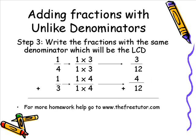Step 3 is to rewrite the fractions with the same denominator — the least common denominator from the previous step. As you can see, we have changed 1/4 to become 3/12 by multiplying the numerator and denominator by 3, and we have changed 1/3 to become 4/12 by multiplying the numerator and denominator by 4. So instead of 1/4 plus 1/3, now we have 3/12 plus 4/12, and our challenge has been solved in that the denominators are now the same.